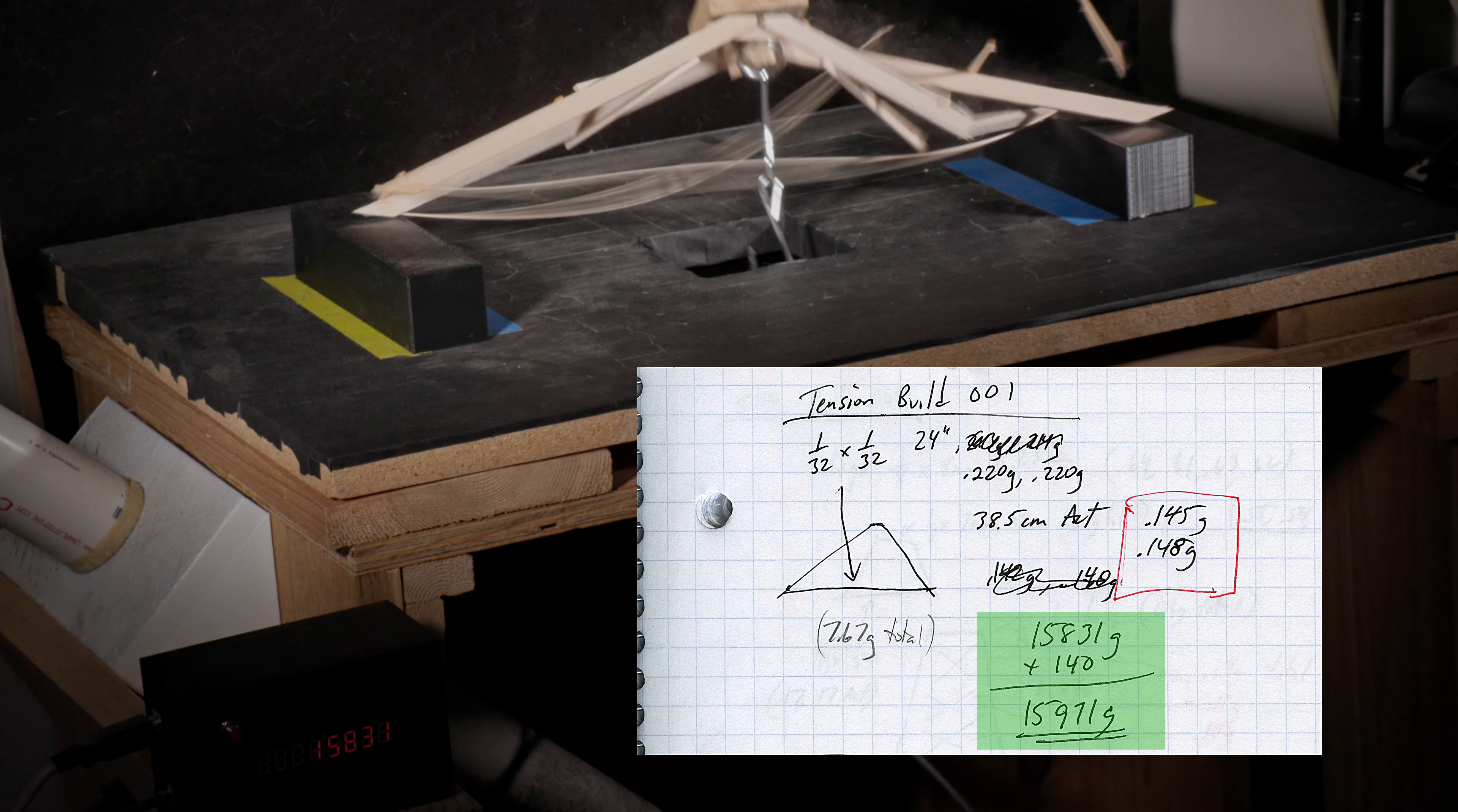The bridge did hold the entire weight and failed at 15.97 kilograms. That was somewhat of a surprising result for me as I wasn't expecting that tension pair to perform that well. As it turned out this isolated tension test only told part of the story that I'll explain a little later.